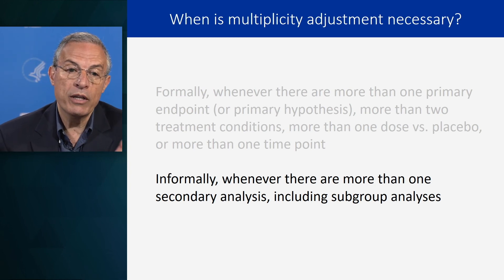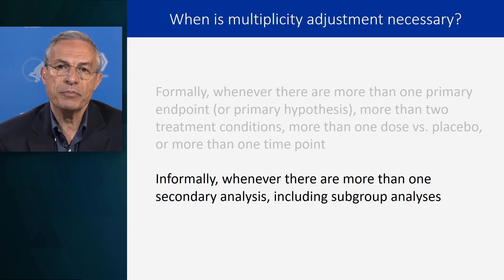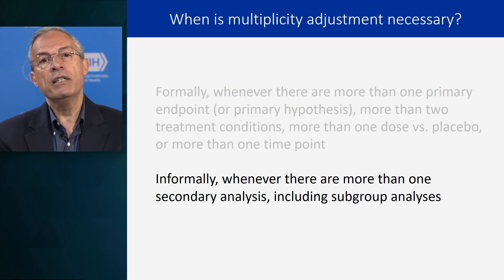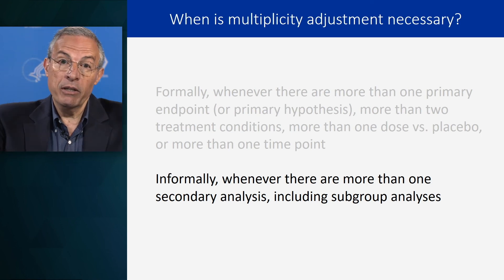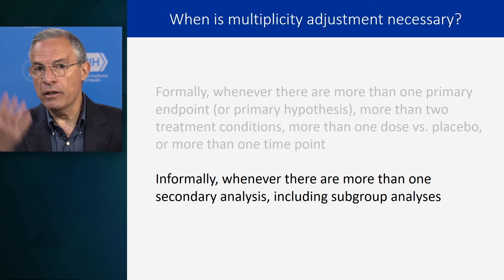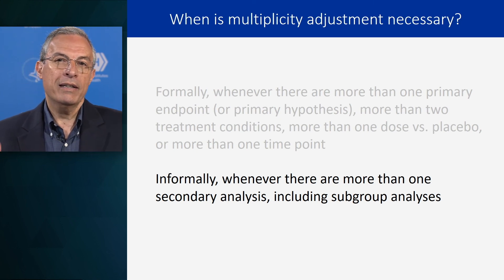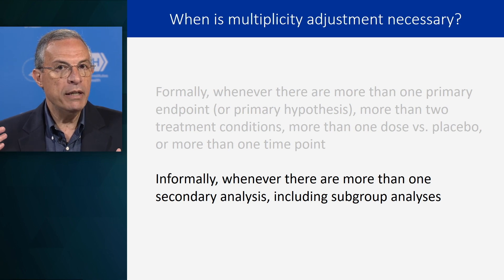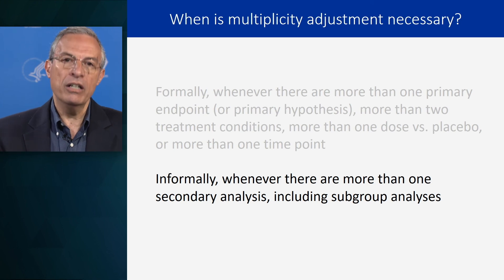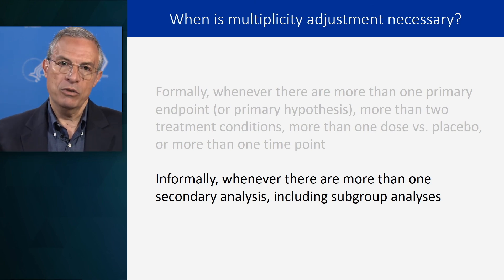Informally, whenever there are more than one secondary analysis, including subgroup analysis. When it is informal, you basically tell the reader in the paper — you can see from the table with so many subgroups — and highlight the fact that you've done a lot of subgroup analysis. Here are the confidence intervals, here are the p-values, but warn the reader that these p-values have to mentally be adjusted. In other words, if you're going to use a threshold, lower it. Make it harder — if you see a p-value of 0.03 when you've done 20 tests, don't take it too seriously. That's the bottom line.